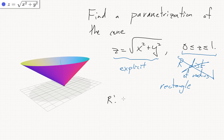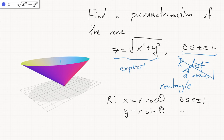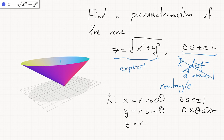We set x equals r cos theta, y equals r sine theta, for r between 0 and 1, and theta between 0 and 2 pi. This is our parameter domain. Now z equals root x squared plus y squared equals r. So this gives us a parametrization of the cone in the form that we want.